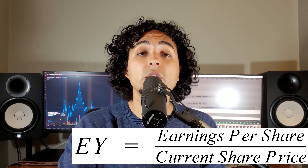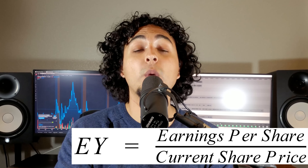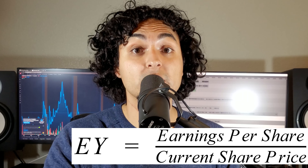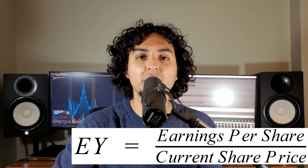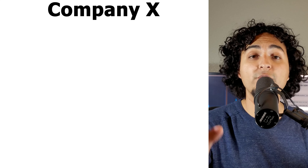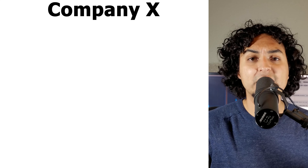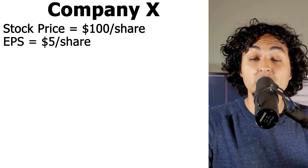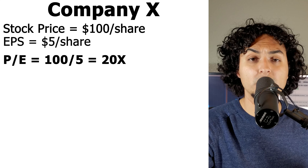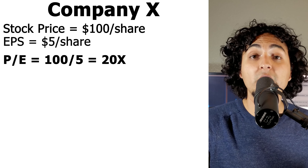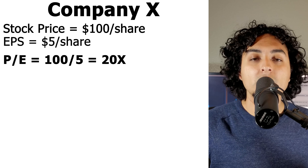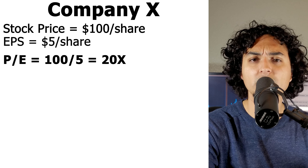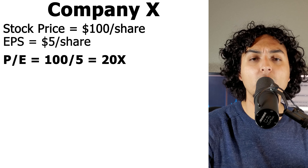When you calculate earnings yield, you get a percentage. This percentage represents how much money a company is bringing in relative to its current stock price. Let's go over an example. If we have Company X with a current stock price of $100 and earnings per share of $5, we can calculate the price to earnings ratio by dividing $100 by $5, which gives you a 20x multiple. This means the investor is willing to pay $20 to receive back $1 of the company's earnings.